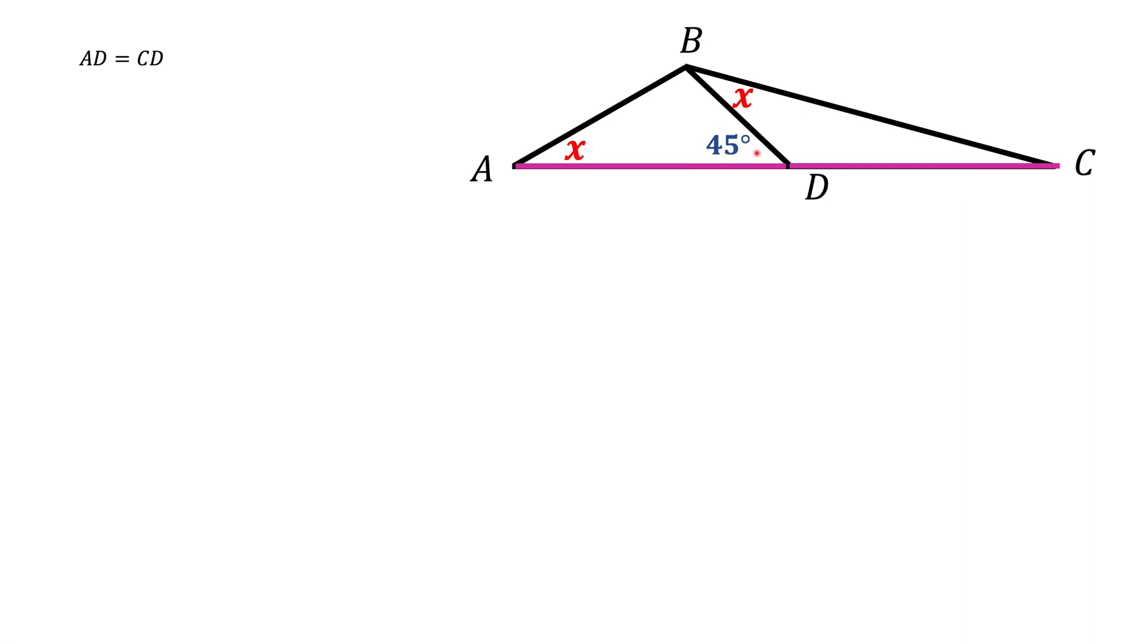First of all, notice that this angle 45 degrees is an external angle to the triangle BDC, and therefore it is the sum of this angle x and the angle C. Therefore, the angle C should be 45 minus x.